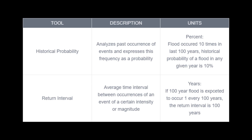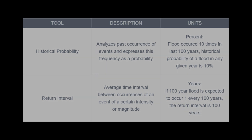Return intervals, also known as return periods, represent the average time interval between occurrences of an event of a certain intensity or magnitude. They are often expressed in years and are calculated using a statistical method to estimate the likelihood of an event occurring over time. For example, if a 100-year flood is expected to occur once every 100 years, the return interval is 100 years.